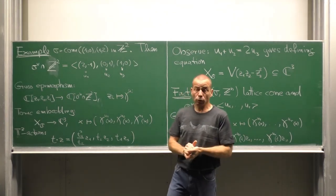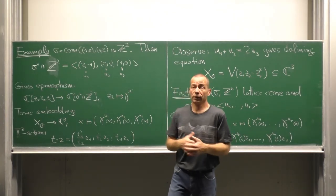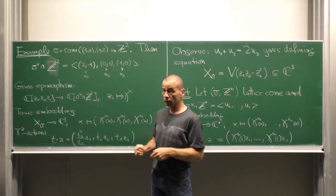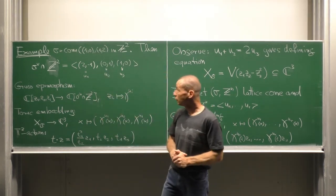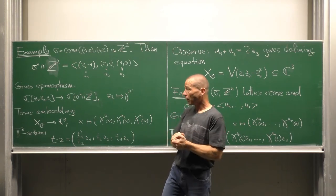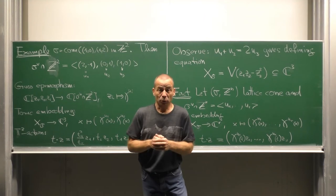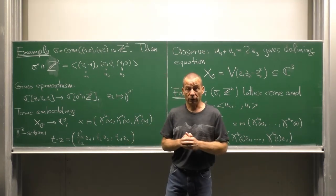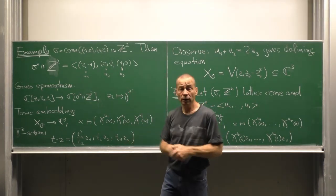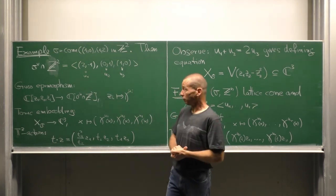The associated cone monoid sigma-dual intersected Z^2 is generated by three vectors, namely (2,-1), (0,1) and (1,0). That means that the associated monoid algebra has also three generators, namely the chi^u_i stemming from these vectors.